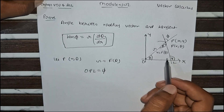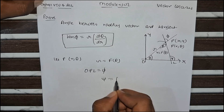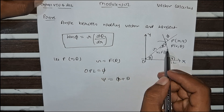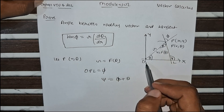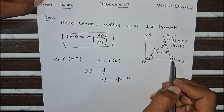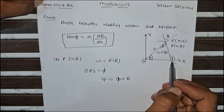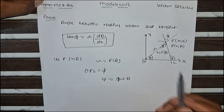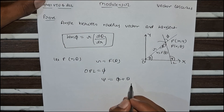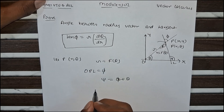From our figure we can see that ψ equals φ plus θ. This is because ψ is the exterior angle, and φ plus θ are the two interior angles — the exterior angle equals the sum of the two non-adjacent interior angles.